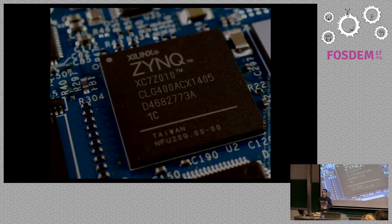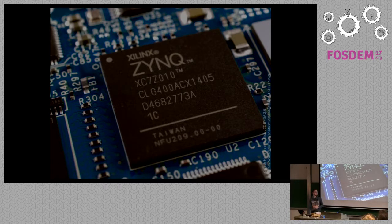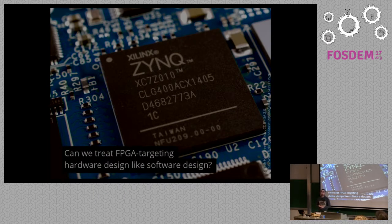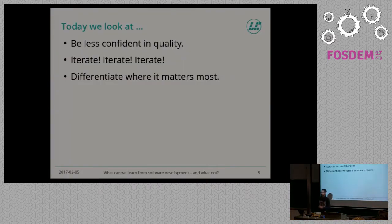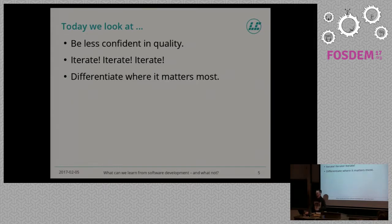The thing is, we're in a world of FPGAs now more and more. They're coming closer to you — Intel is putting them closer to your processor, putting them in data centers. Now you don't even have to buy a huge FPGA board anymore, you can just rent them by the hour at Amazon or Microsoft. This makes hardware development much more accessible. So the question is: can we treat hardware development that actually targets ASICs or reprogrammable hardware a bit more like software design? We have a look at three things: be less confident in the quality you get, iterate iterate and iterate again, and look at where we can actually make a difference.